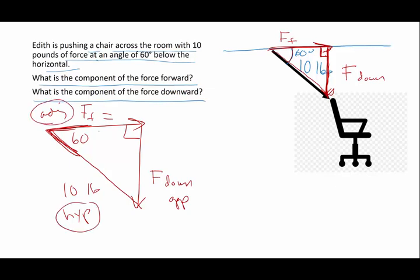So the force forward in this situation, the adjacent is going to be equal to the cosine of theta times my hypotenuse, which is that 10 pounds. So the cosine of 60 degrees times the hypotenuse, which is 10 pounds, and the force forward, I'm going to pick up my calculator, so 60 cosine times 10 is going to be 5 pounds.